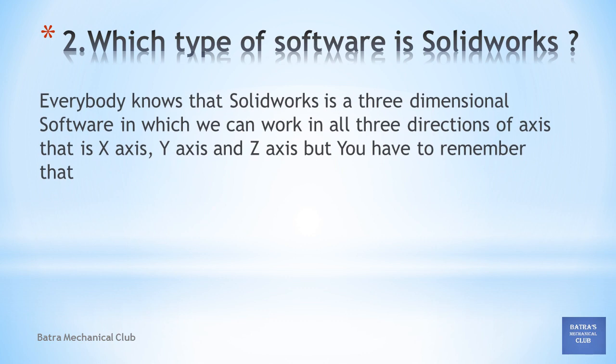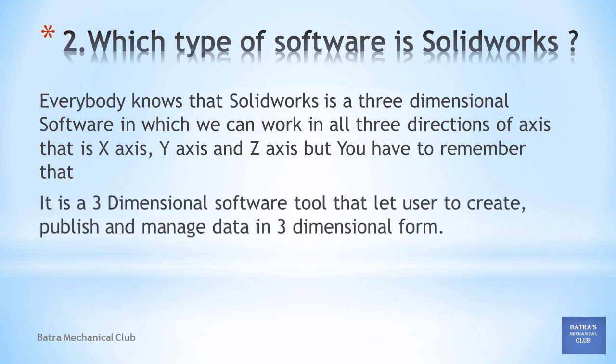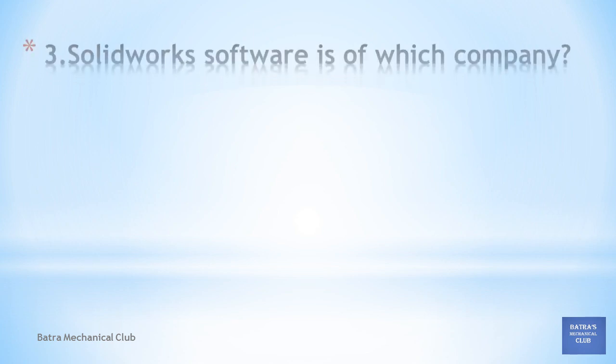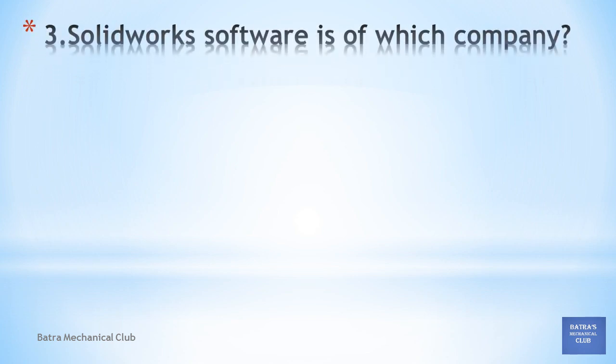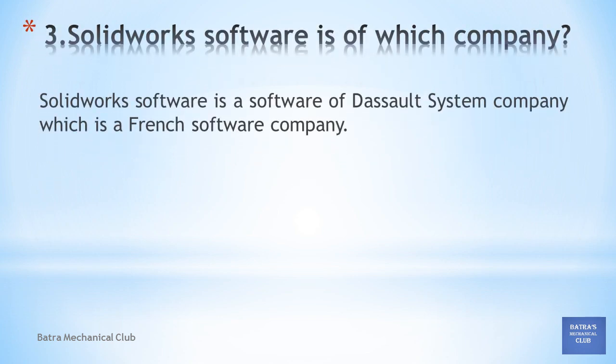Next question: which type of software is SolidWorks? Everybody knows that SolidWorks is a 3-dimensional software in which we can work in all three axes — X-axis, Y-axis, and Z-axis. You have to remember that it is a 3-dimensional software tool that lets users create, publish, and manage data in three-dimensional form. It's not just a software — it's a 3-dimensional software tool.